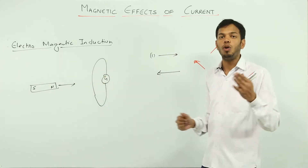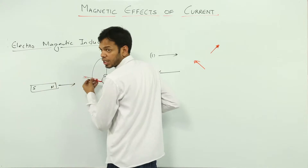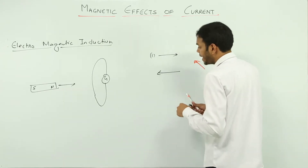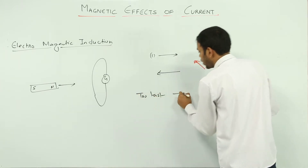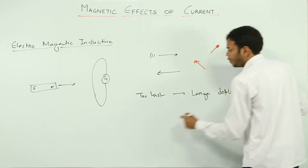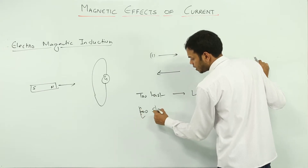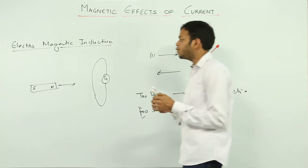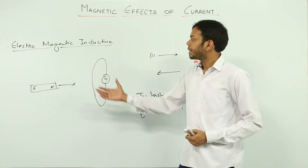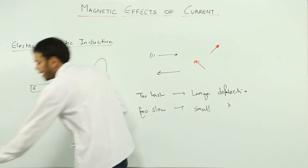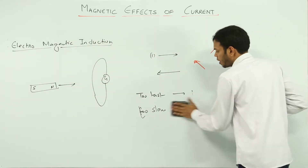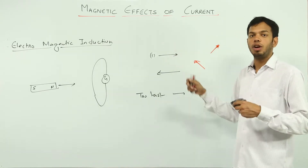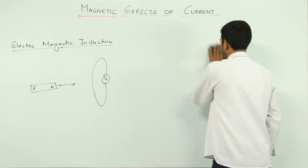The rate at which you bring the magnet closer to the loop determines the extent of the needle's deflection. If you bring it very fast, the needle shows a large deflection; if you bring it very slowly, the needle shows a very small deflection. These were the basic observations by Faraday, later written down as Faraday's laws of electromagnetic induction. This is not strictly in your syllabus but helps you understand the topic more clearly.